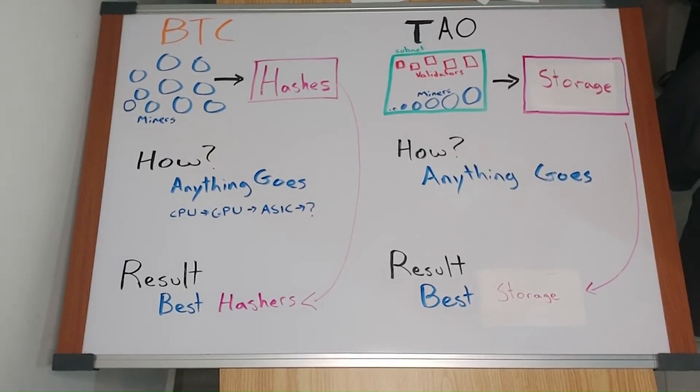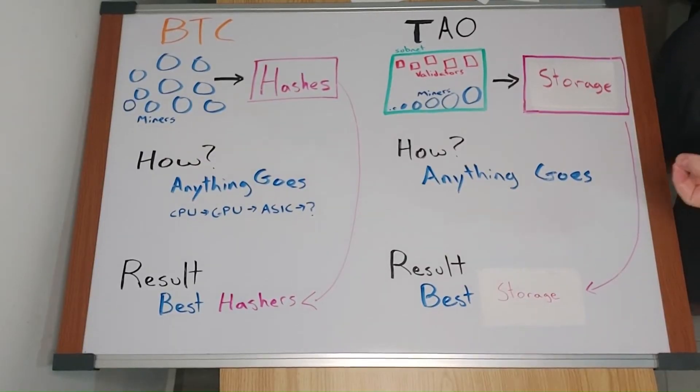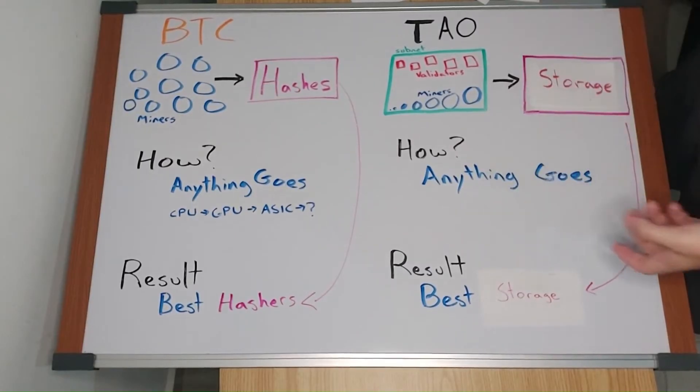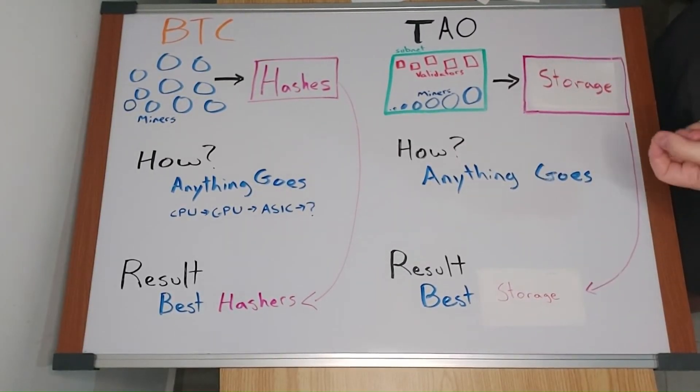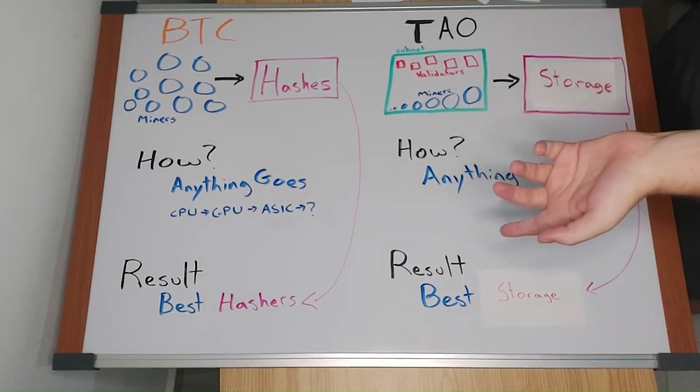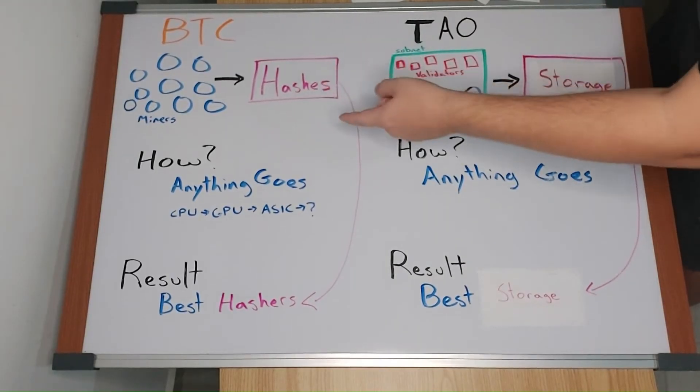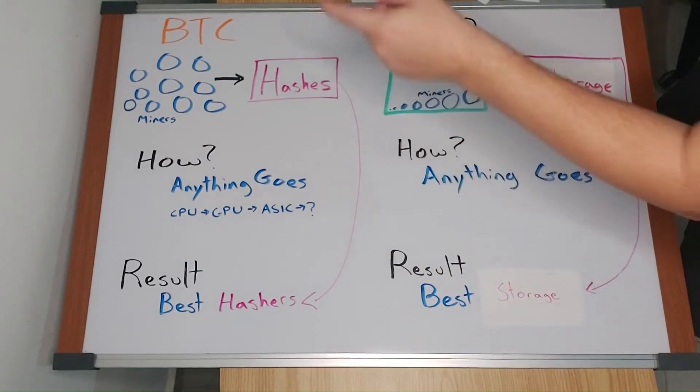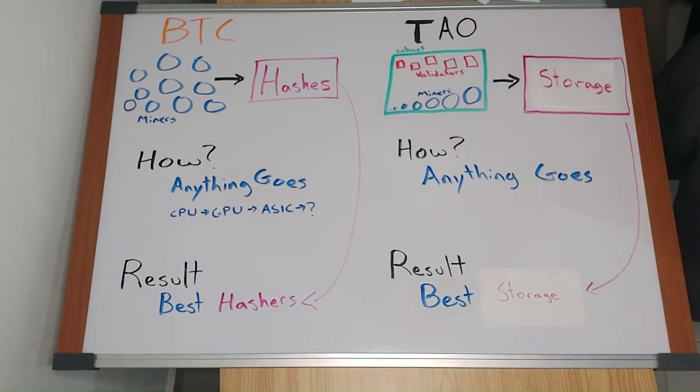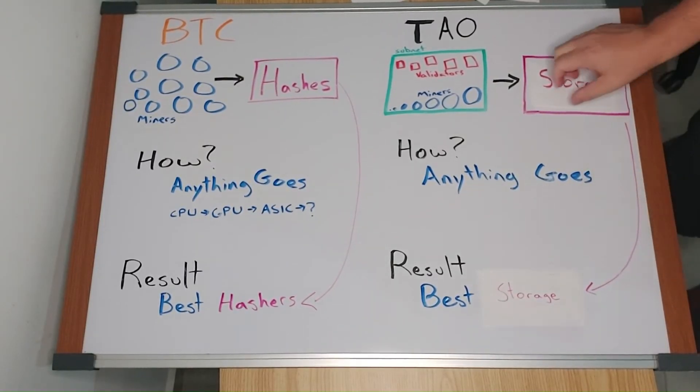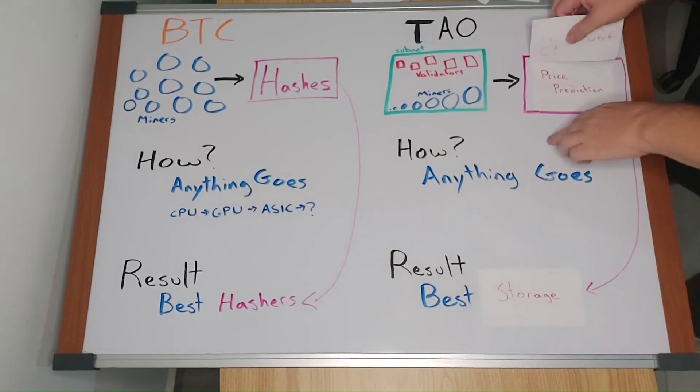Let's take a look at the price prediction subnet. It's attracting teams of traders and AI people to predict the future price of many assets. Remember how we observed in Bitcoin there is an incentive to make the most powerful machines that are the best at guessing hashes. The price prediction subnet is doing that, but for trading price prediction.